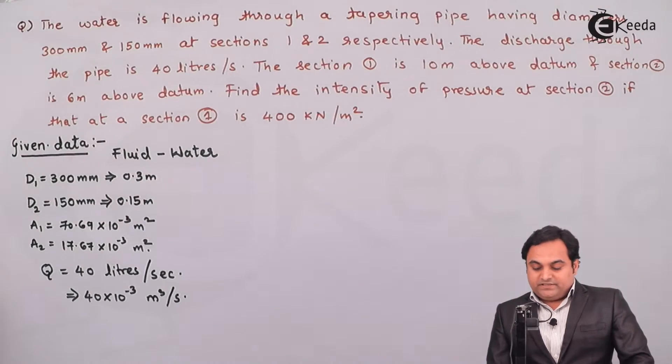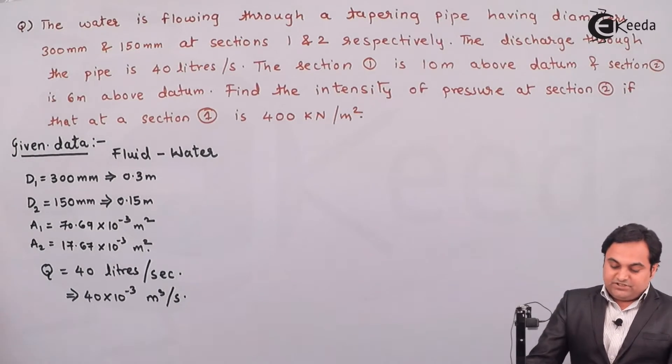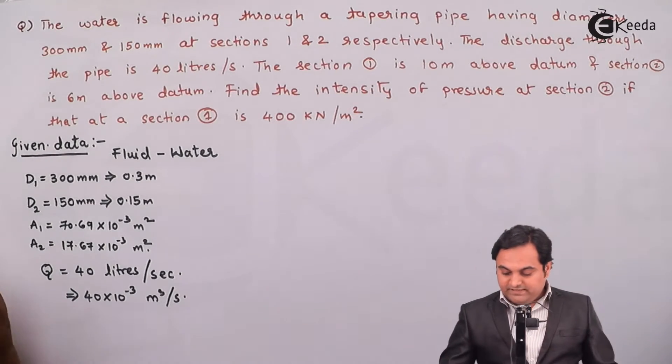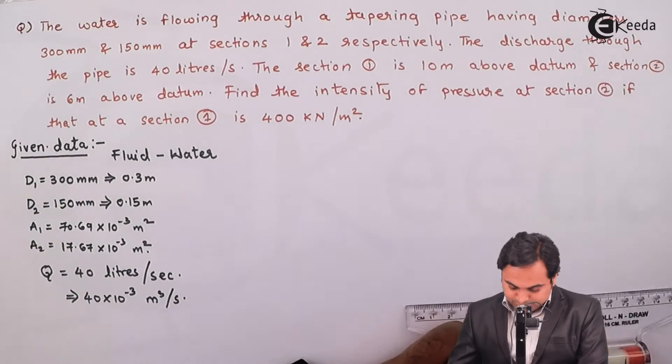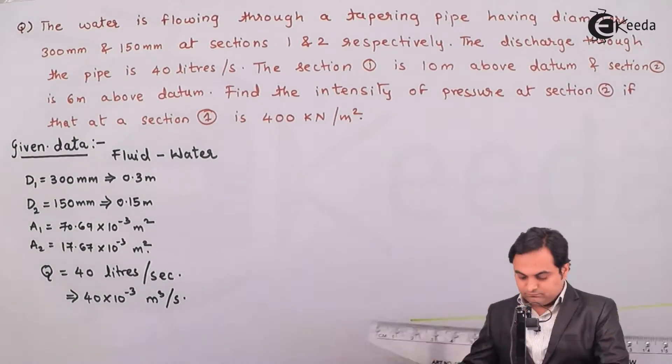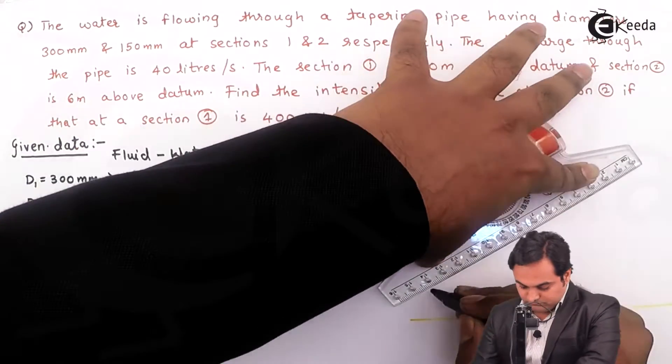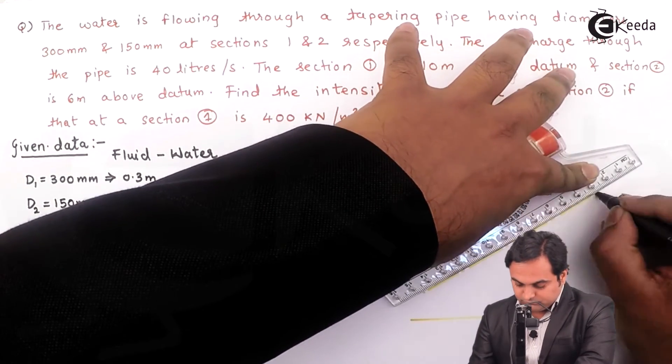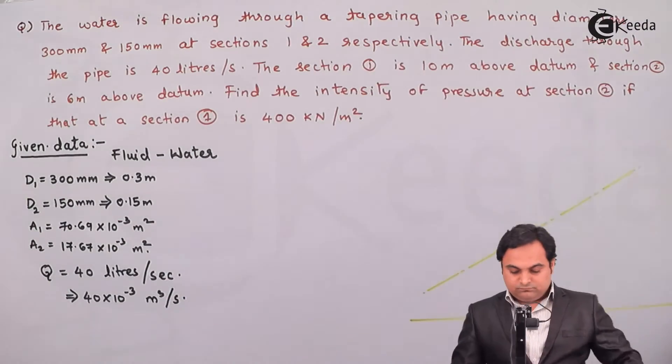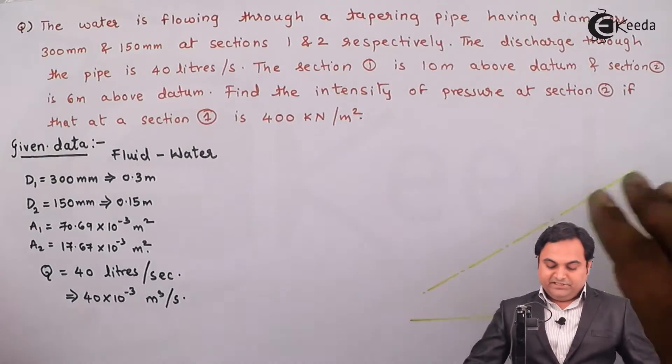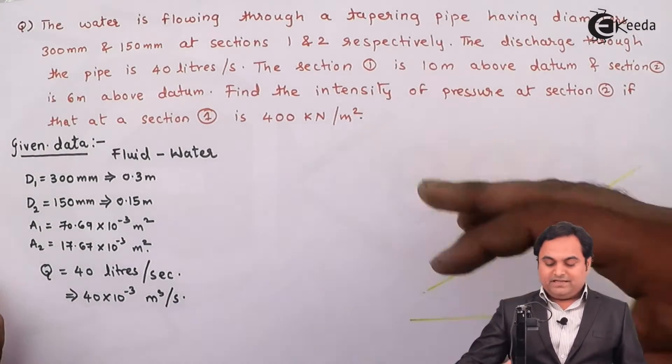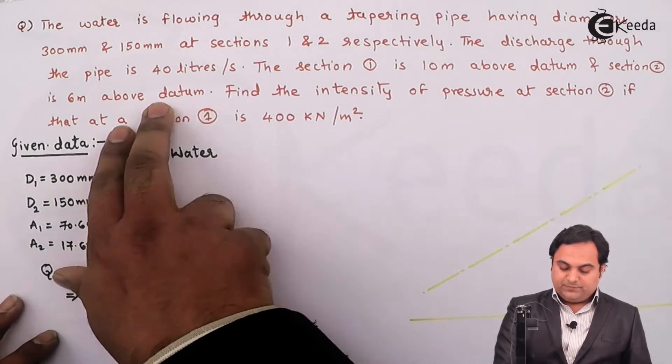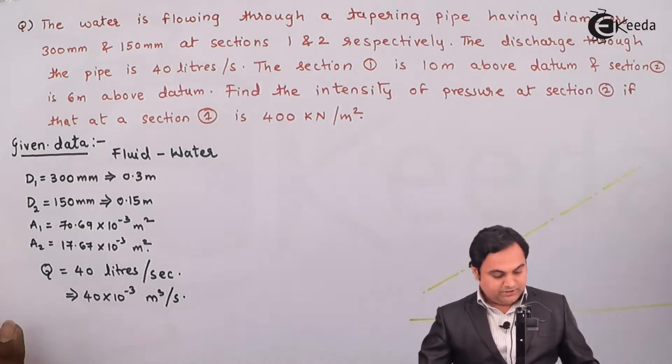Then section 1 is 10 meter above the datum and section 2 is 6 meter above the datum. I'll explain this with the help of a diagram. It indicates that section 1 is at 10 meter, means it is at a higher level compared to section 2 which is 6 meter above datum.